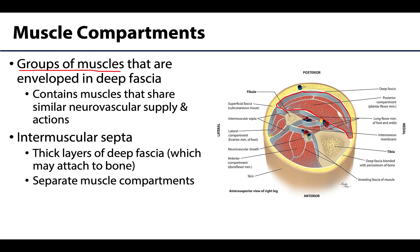Deep fascia is located deep to the superficial fascia — this adipose-filled layer, or subcutaneous layer, under the skin. These muscle compartments surrounded by deep fascia contain groupings of muscles that share a similar neurovascular supply as well as similar actions.